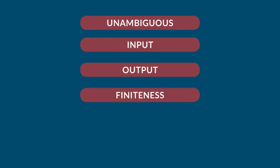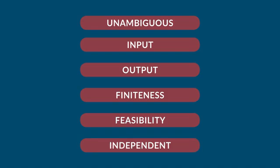Fourth is finiteness: algorithms must terminate after a finite number of steps. Fifth is feasibility: it should be possible with available resources. And the last one is independent: an algorithm should have step-by-step directions which should be independent of any programming code.